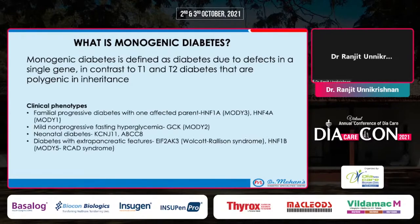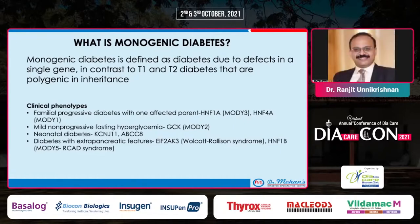There are four clinically important phenotypes of monogenic diabetes. The first is a progressive form of youth-onset diabetes with one affected parent, traditionally called MODY 3 and MODY 1. These are due to mutations in transcription factors important in the development and functioning of pancreatic beta cells — HNF1-alpha and HNF4-alpha.